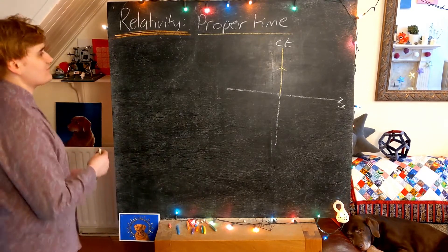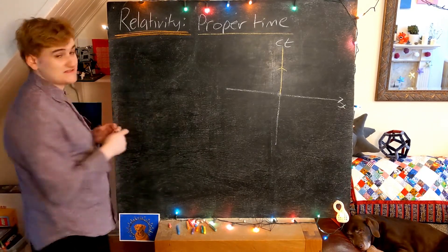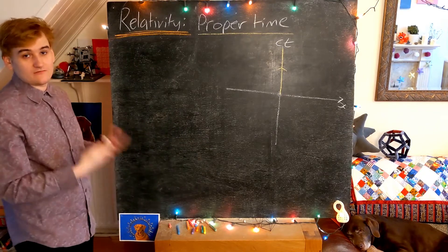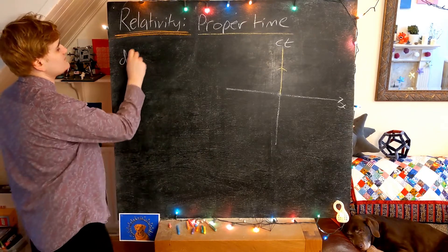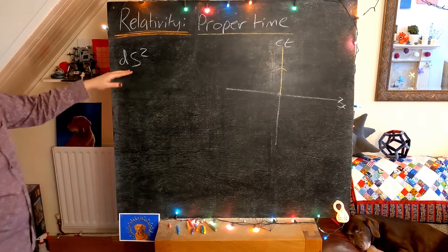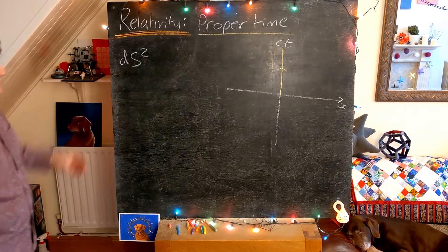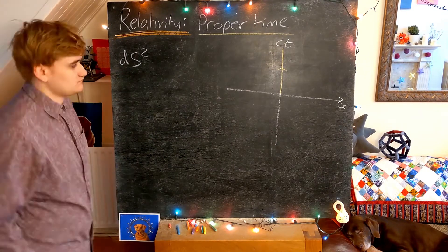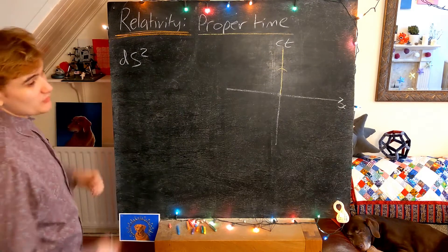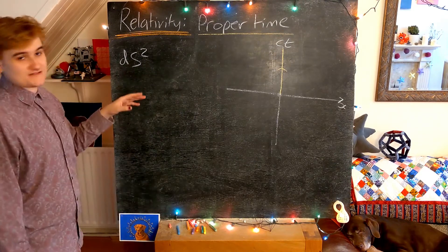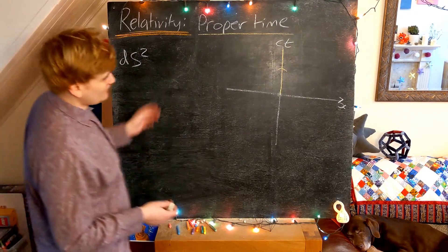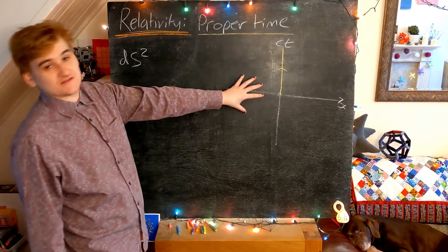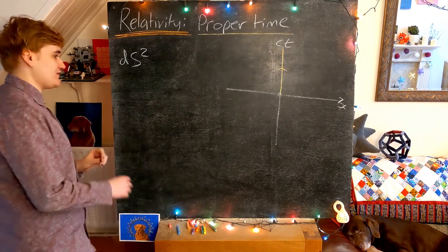We can now use an incredibly important property of the metric: essentially, the metric is going to be an invariant, or a Lorentz invariant. So regardless of the coordinates you use to write down this ds², its value is always going to be the same. We can use this fact that ds² is an invariant to look at quantities defined in one reference frame and translate them into another.